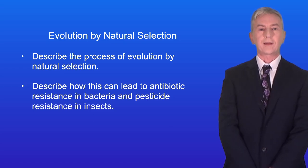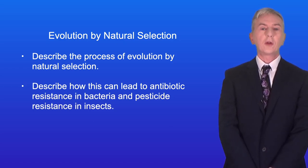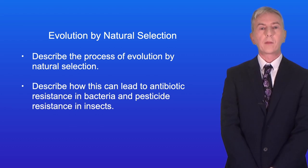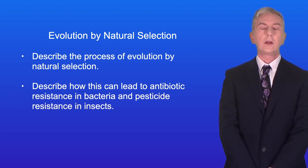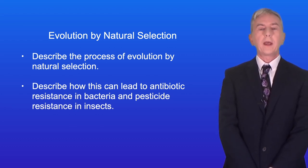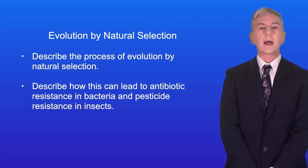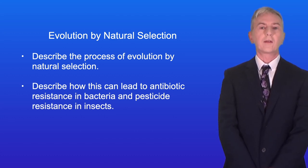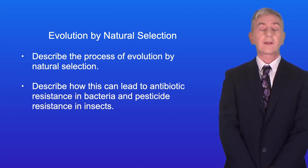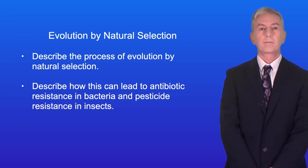Hi and welcome back to Free Science Lessons. By the end of this video, you should be able to describe the process of evolution by natural selection. You should then be able to describe how this can lead to antibiotic resistance in bacteria and pesticide resistance in insects.